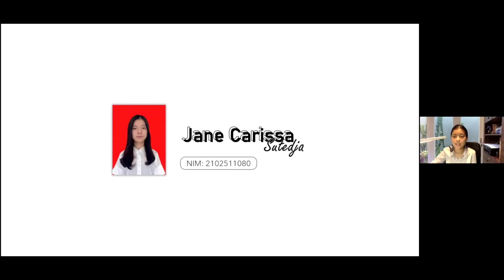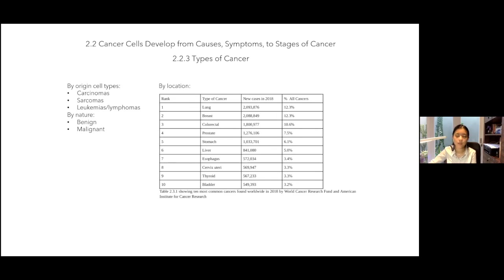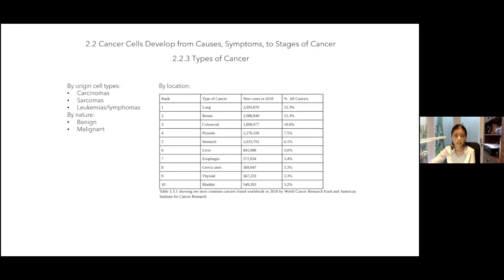My name is Jinkansen Sotejia, with the last three-digit NIM 080. I will explain about types of cancer. There are several ways to classify types of cancer: by origin cell types into carcinomas, sarcomas, leukemias, or lymphomas; by nature, whether benign or malignant; and by location. A table shows the top 10 most common cancers found in 2018 by the World Cancer Research Fund and the American Institute for Cancer Research.